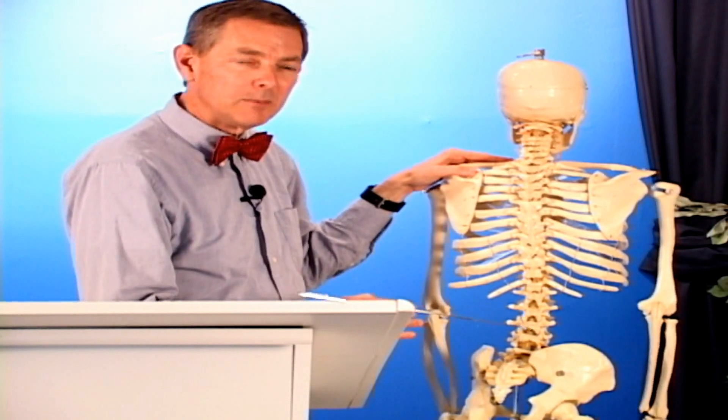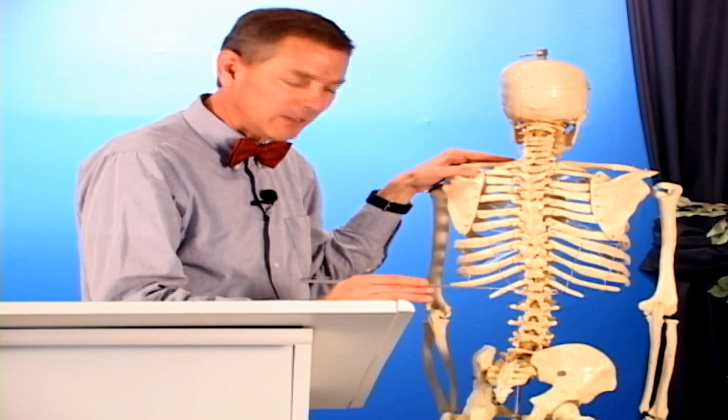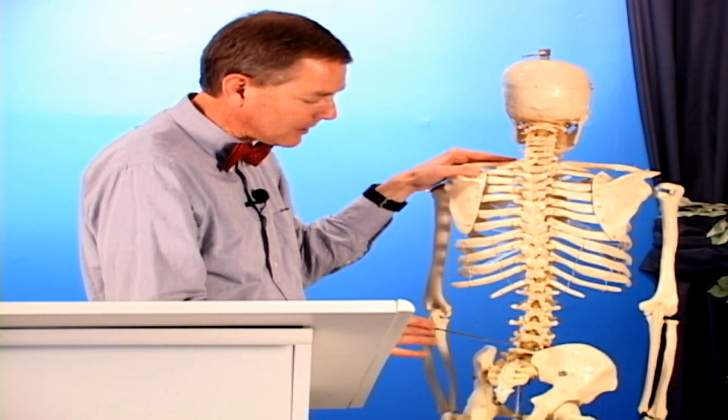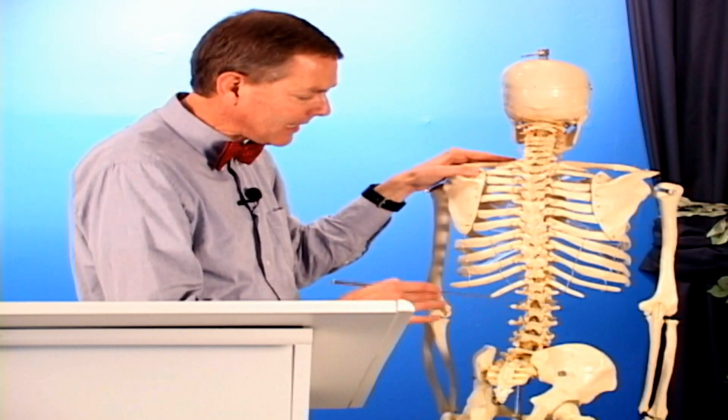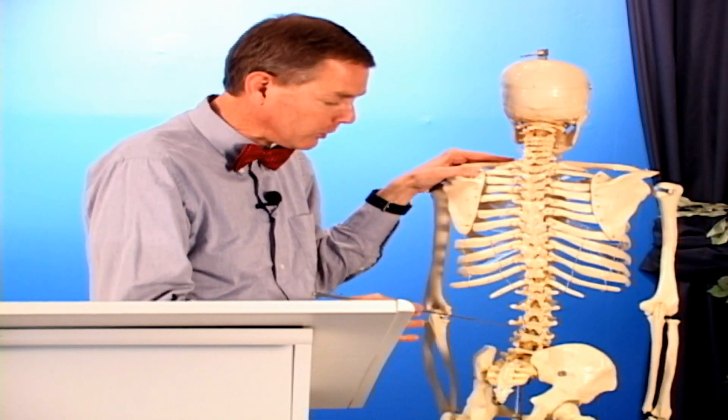Another muscle is the multifidus, named because it has multiple fingers. It's really part of the erector spinae, but goes from the transverse process of one vertebra to the next, leapfrogging the whole way up. The multifidus is the only segmentally innervated back muscle, so if you lose spinal nerve L4, you lose the multifidus at L4 with nothing else to take its place.